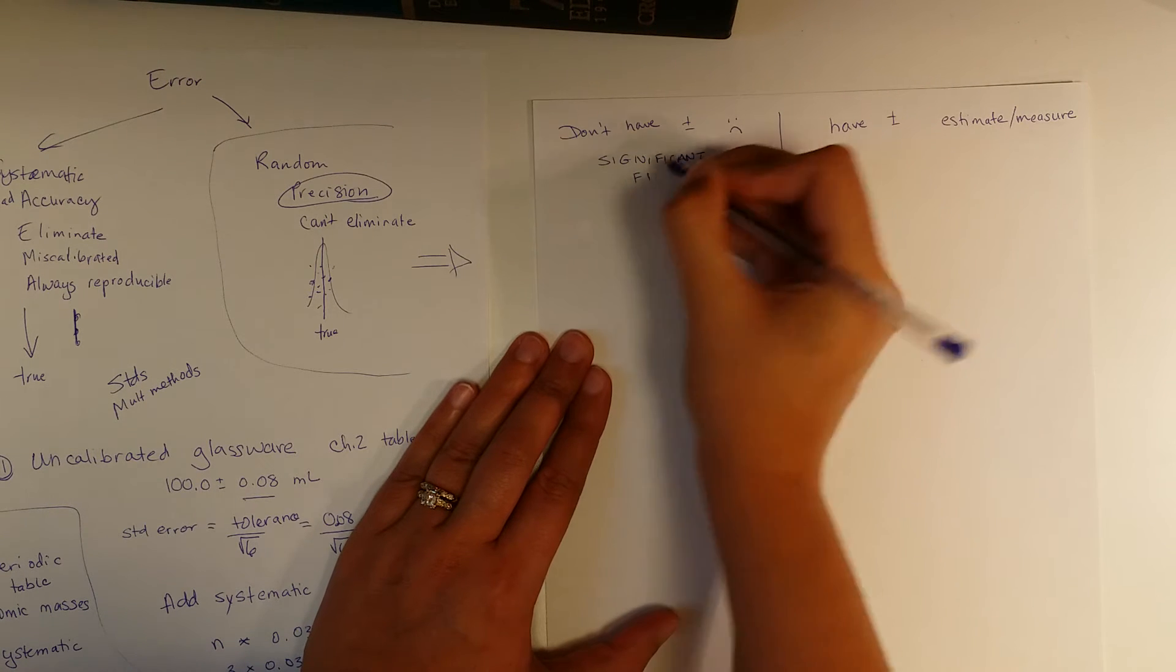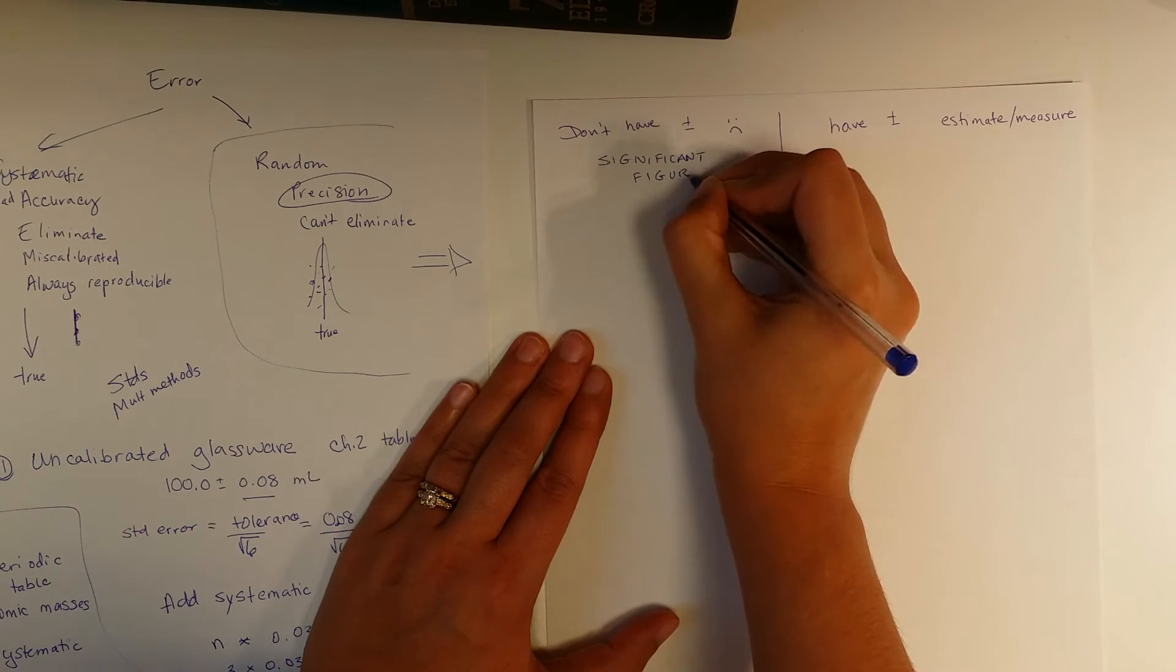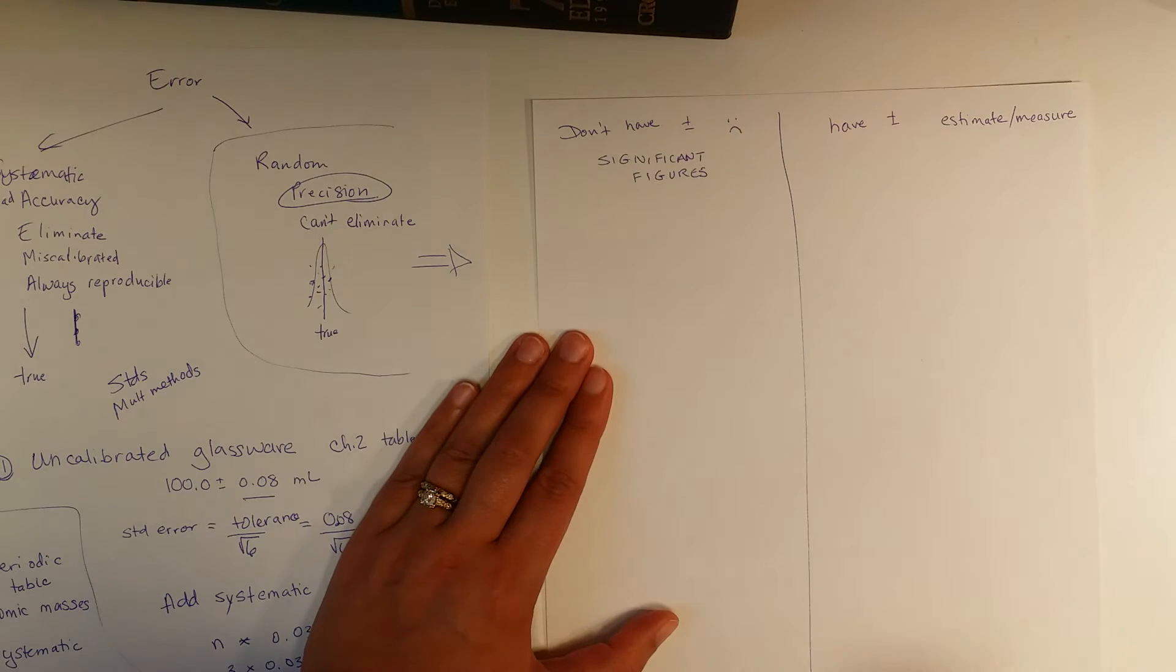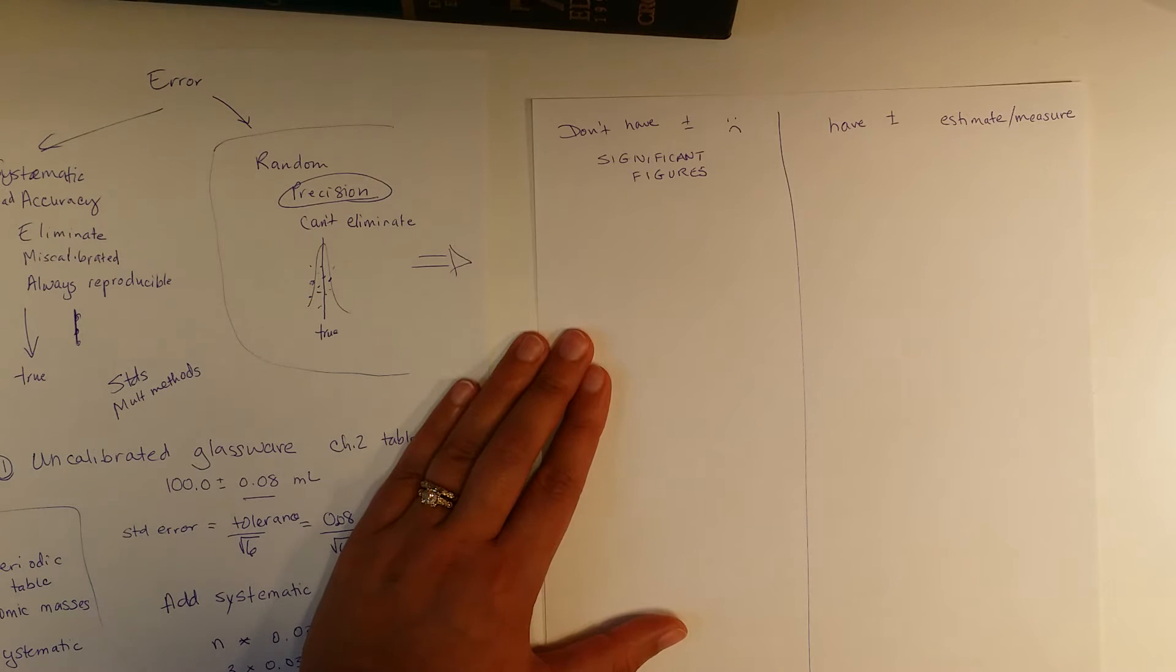I know Dr. Gosher is getting a little sarcastic here, but in reality significant figures are very helpful because what they do is they help us describe precision when we don't have a plus or minus. So okay, let's talk about the simplest thing.